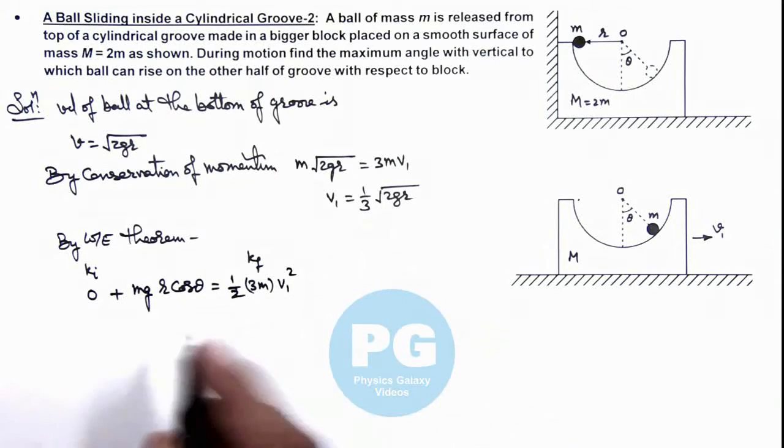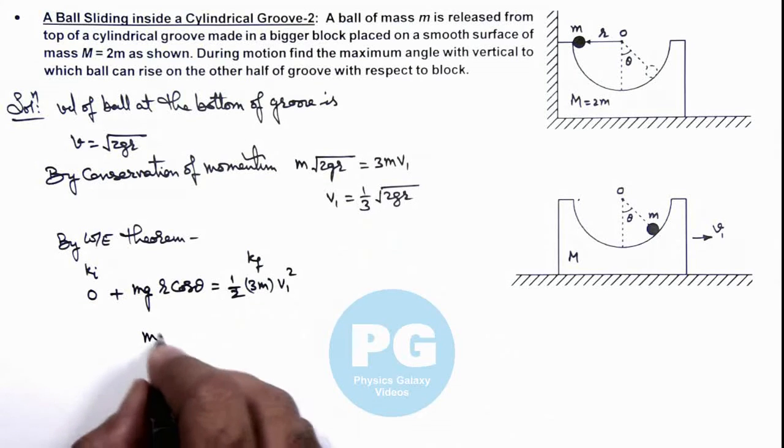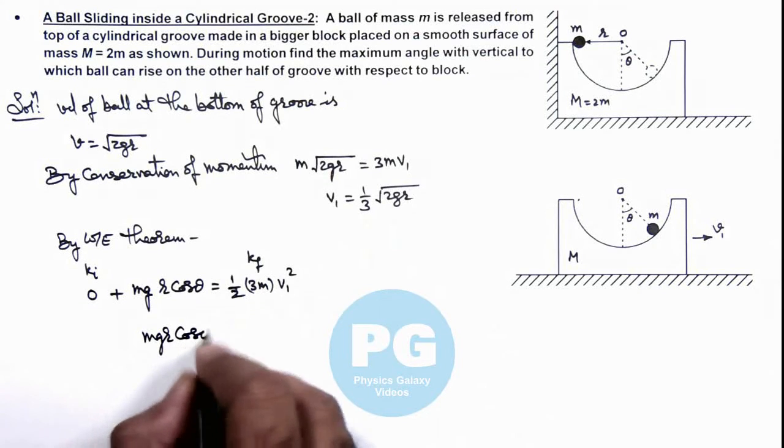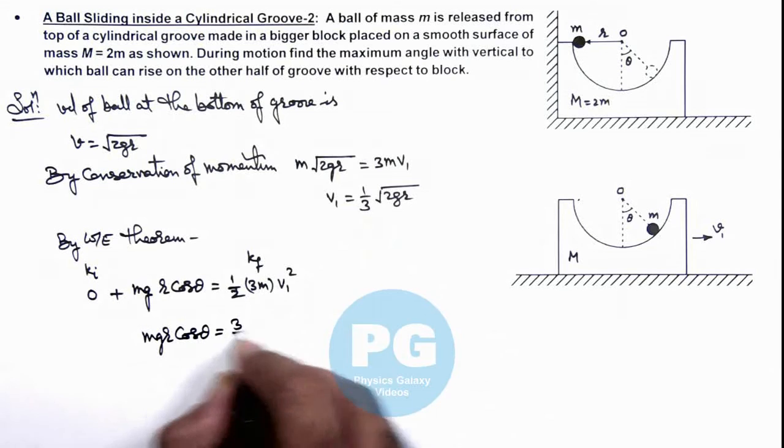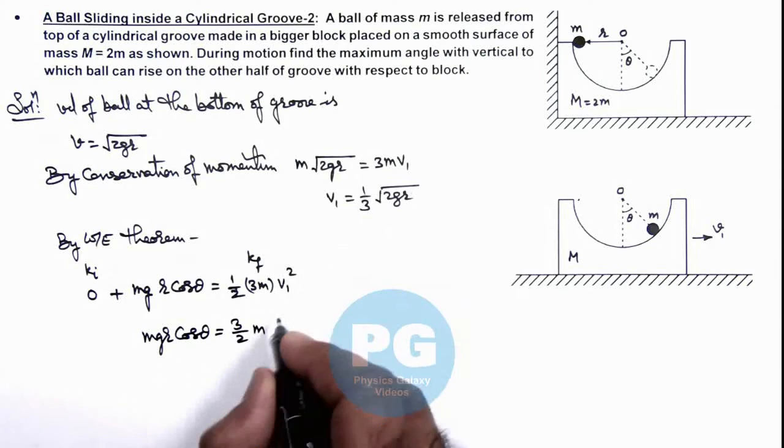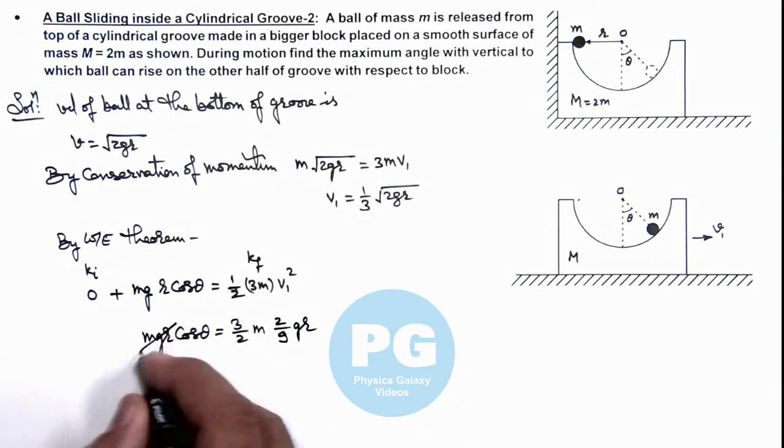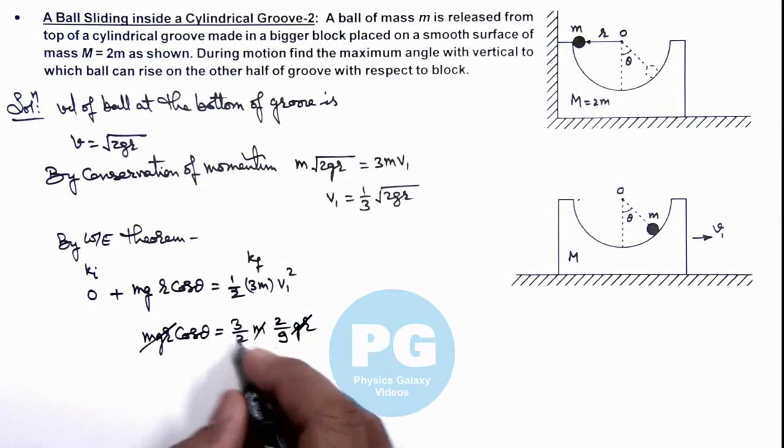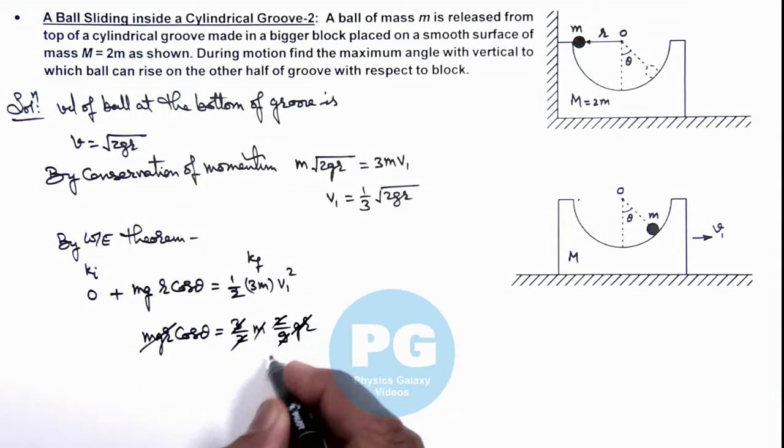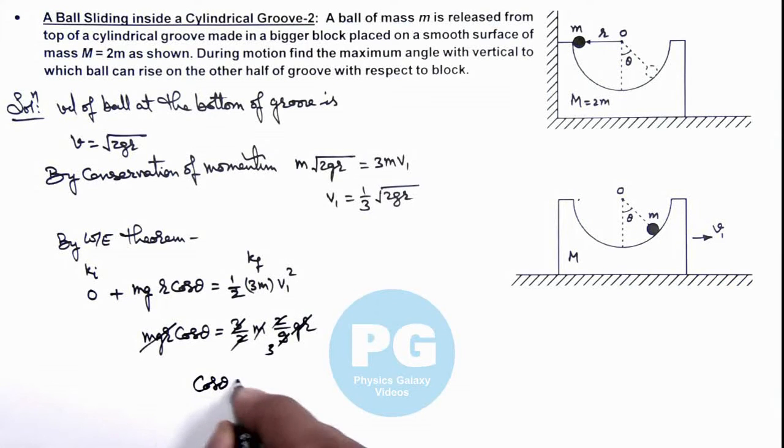Now we can substitute the value of v₁, which gives mgR·cos θ = (3/2)m·v₁², where v₁² is (2/9)gR. Here mgR gets cancelled out, 2 gets cancelled out, and (1/3) also gets cancelled out. So we are getting the value of cos θ is 1/3.